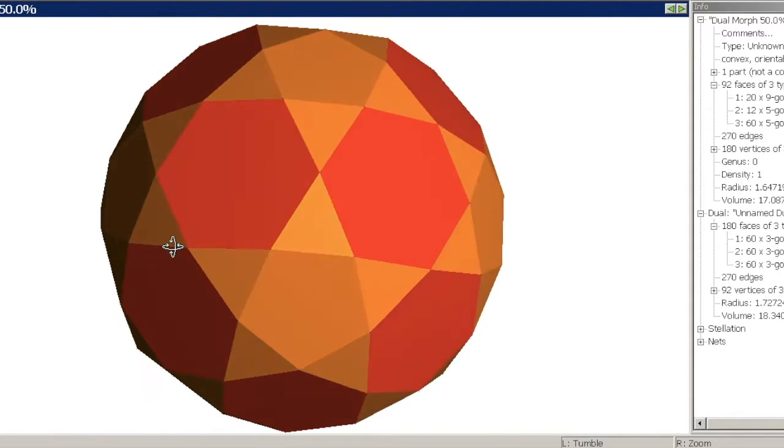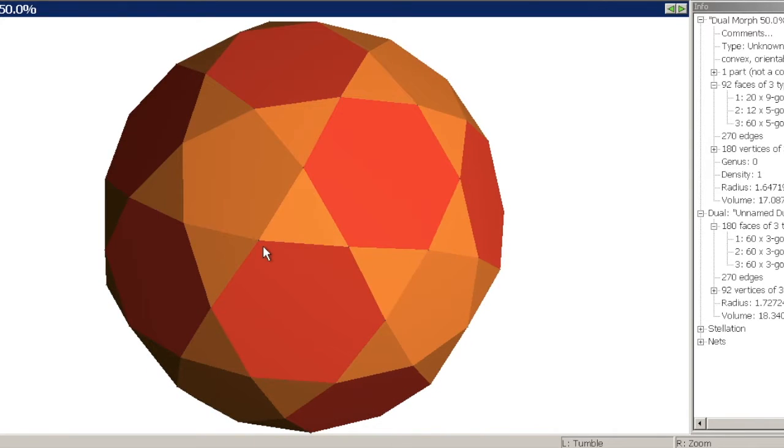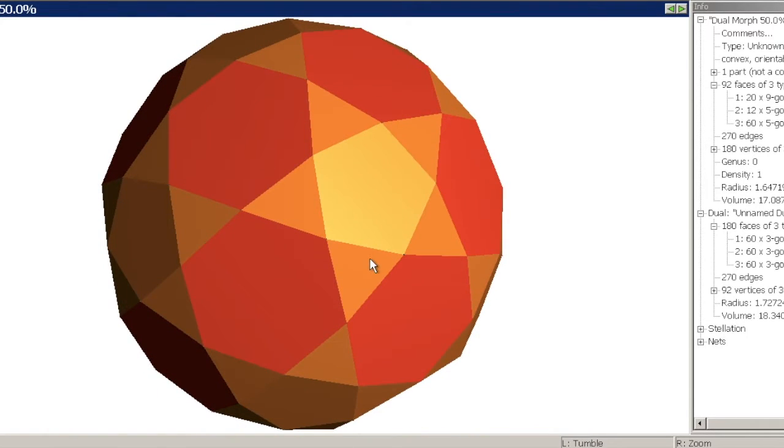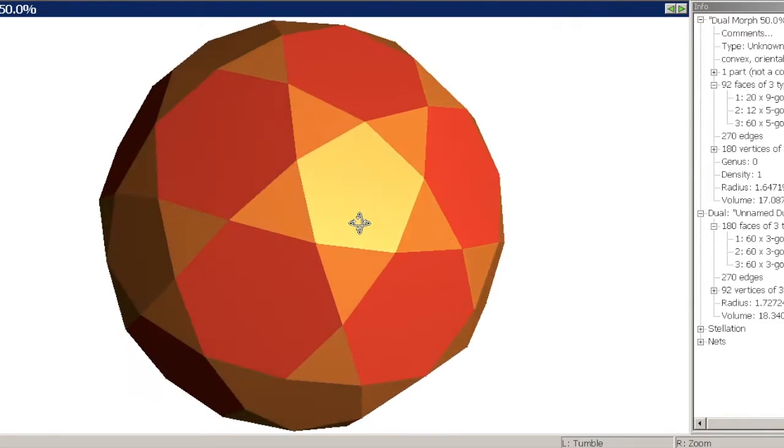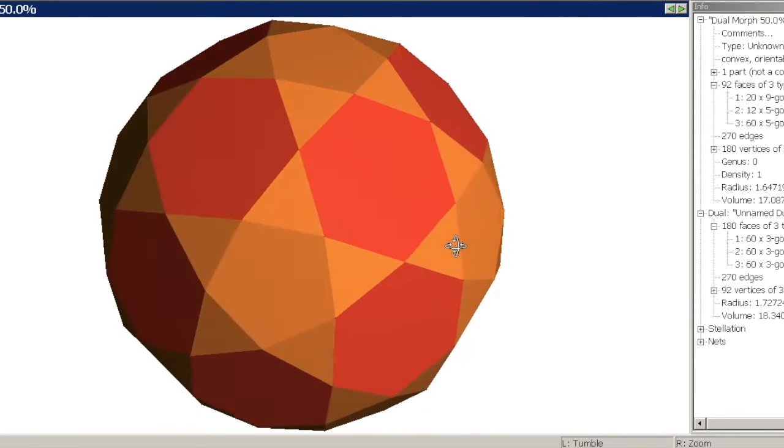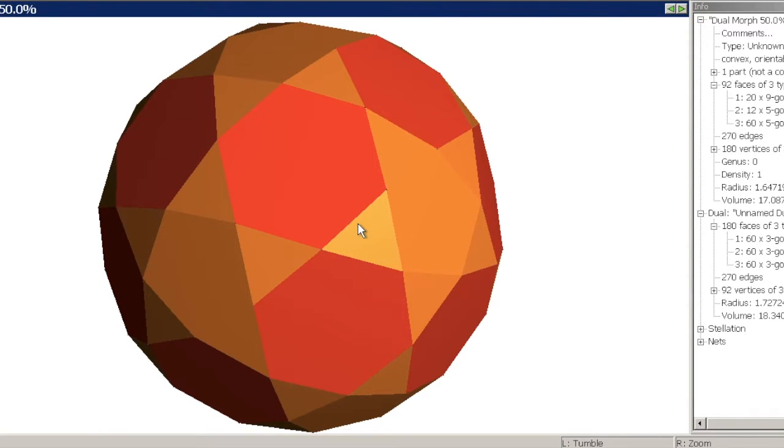To get the rectified version, all you have to do is truncate it again. You're doing the same thing, but this time you do a 50% truncation, which is called rectification - not sure why, but it is. There we go, and that's a rectified truncated icosahedron. It hasn't changed the color of this third one, it's just kept it the same, but you can change your colors after. So that's the family that I'm working with.